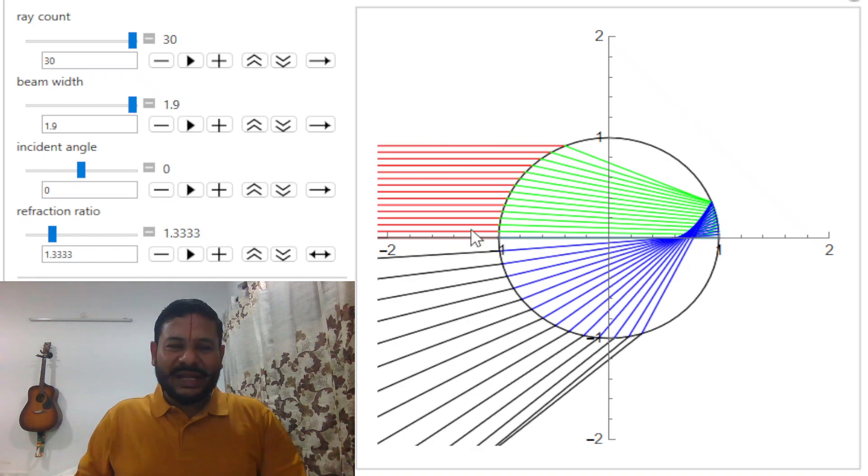Now the crux of understanding the rainbow lies here itself. If you see, look very carefully at my mouse. If you see this ray and this ray, these two rays are divergent rays. Similarly, these two rays are divergent among themselves. As you go along, they're still divergent, divergent, divergent, but somewhere over here, you see this ray and this ray, they are almost parallel to each other. They have become almost parallel to each other. And after this, if you see the last ray and the second last ray, instead of being divergent, they are convergent. So somewhere this divergence is getting converted to convergence. And that means somewhere the rays are going to be parallel as well.